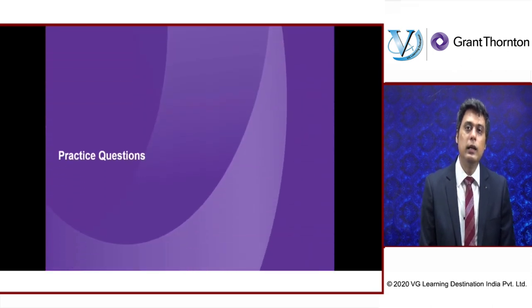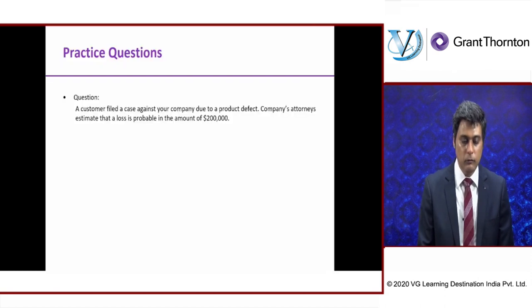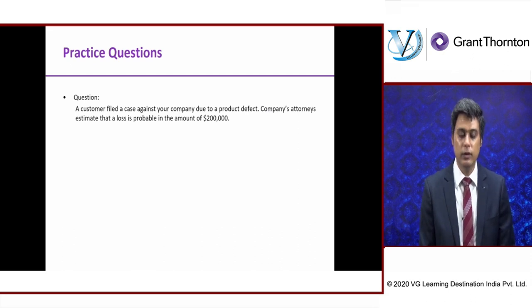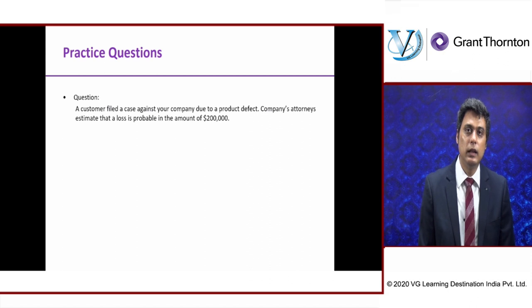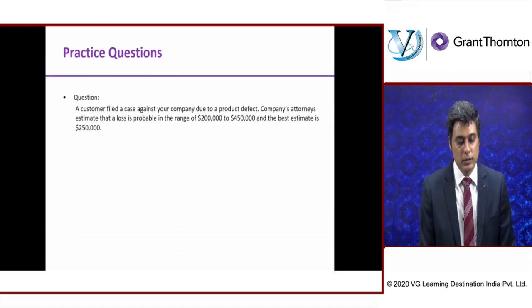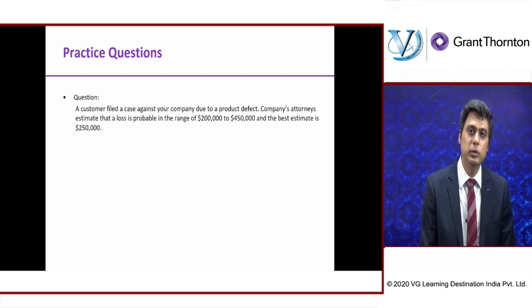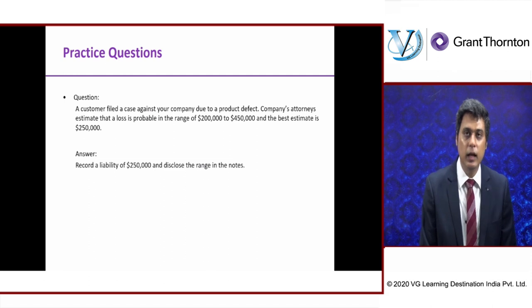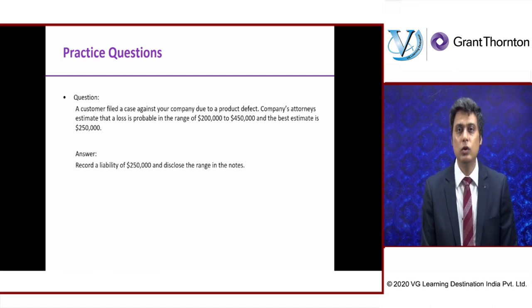Now let's go to some questions. Question 1: A customer filed a case against your company due to a product defect. The company's attorneys estimate that a loss is probable in the amount of $200,000 — so both conditions are met. Answer: record a liability of $200,000. Question 2: Same scenario, but a loss is probable in the range of $200,000 to $450,000, and the best estimate is $250,000. Answer: record a liability of $250,000, but in the notes give the entire range.